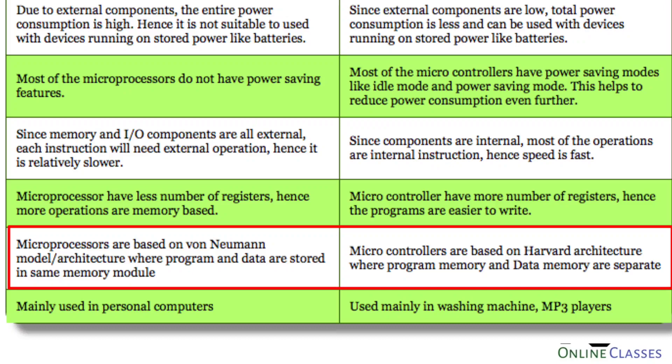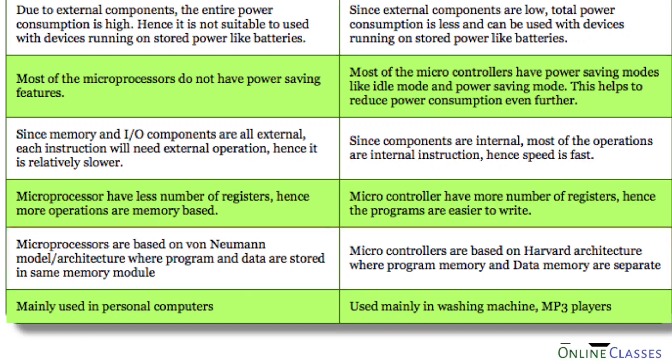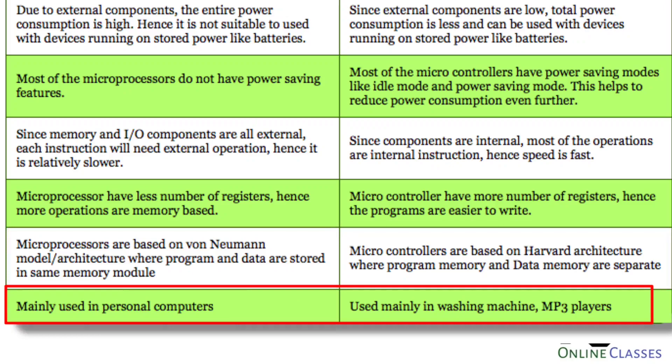That is why the microcontroller's execution speed is on the higher side when compared with microprocessors. Microprocessors are used in personal computers for general purpose tasks. Microcontrollers are dedicated to special purpose applications such as washing machines, MP3 players, and similar embedded devices.